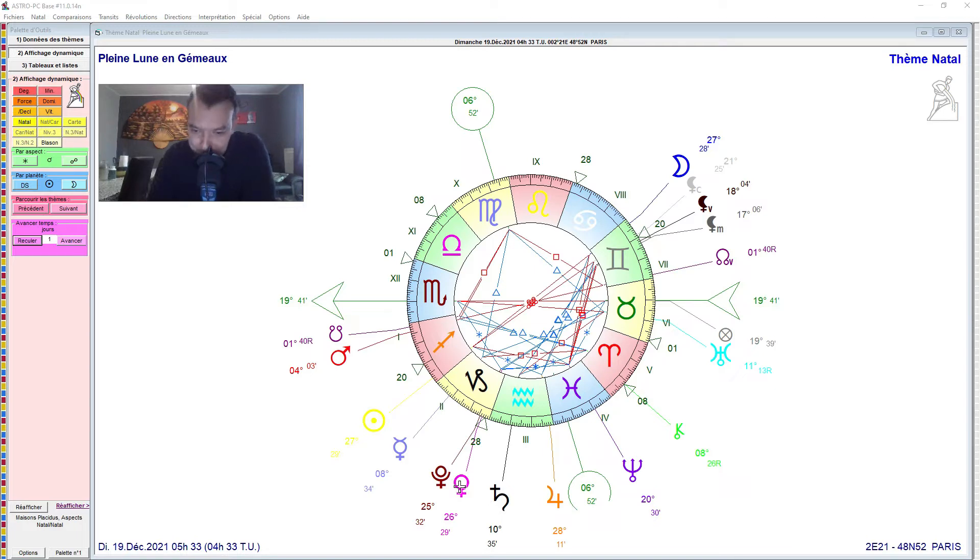Alors c'est vrai que pour revenir au niveau astrologique, donc on a cette pleine lune, donc soleil en sagittaire à 5h33, donc le 19 décembre, à opposer la lune, donc à 27, 28 également, en gémeaux. Donc pleine lune sagittaire gémeaux, la lune en gémeaux, donc phase de demi-cycle, cycle décroissant de la lune, qui redescend, qui a son apogée.